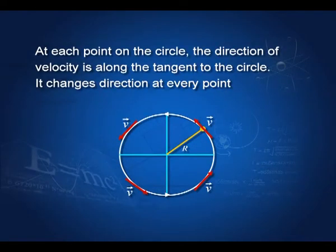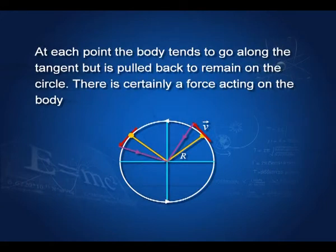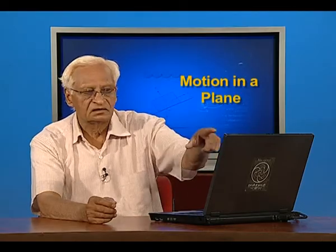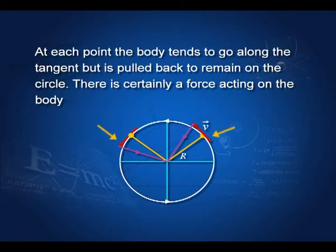Why is this so important? In a circle, the object moves with velocity v tangential to the circle. At every point, it tends to go off the circle along the tangent. There is a force which brings the object back to the circle, as shown by these arrows, so that it keeps moving in a circle with constant velocity v at radius r.